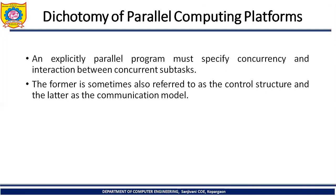Implicit parallelism is related to the microprocessor architecture. Whatever parallelism we achieve with implicit parallelism is related to that microprocessor's inside architecture only. That's why we learned pipeline architecture, latency and bandwidth related to memory, cache and related topics. Now, opposite to implicit parallelism, explicit parallelism specifies the concurrency and interaction between concurrent tasks.